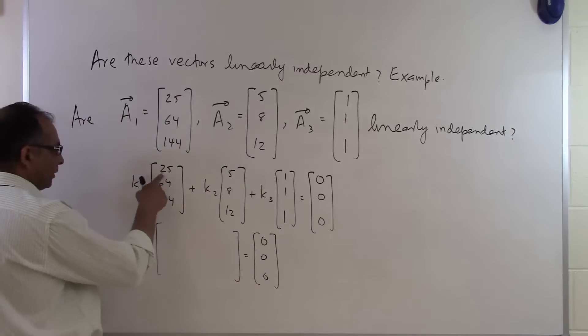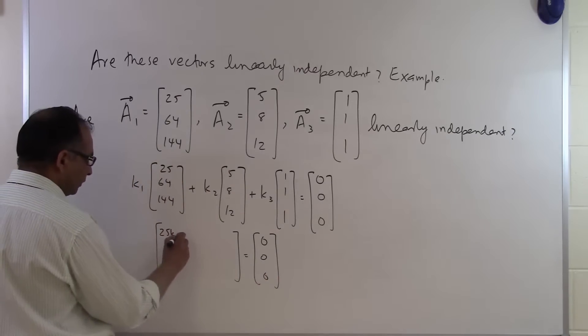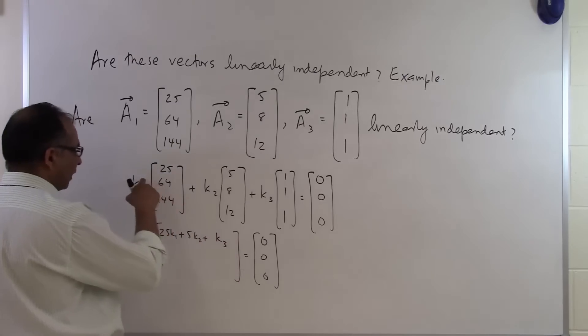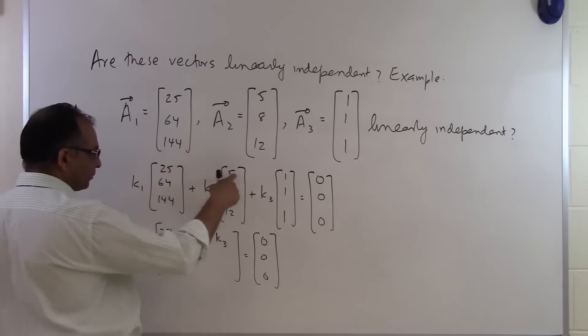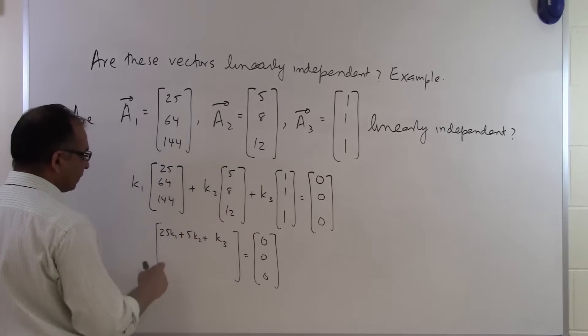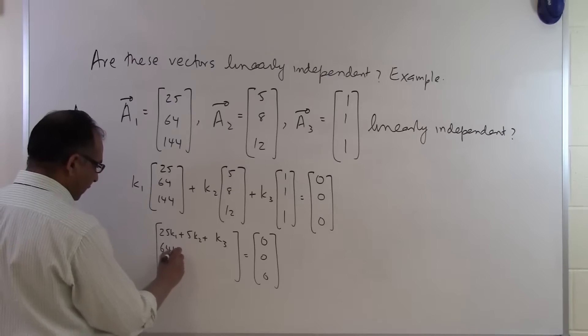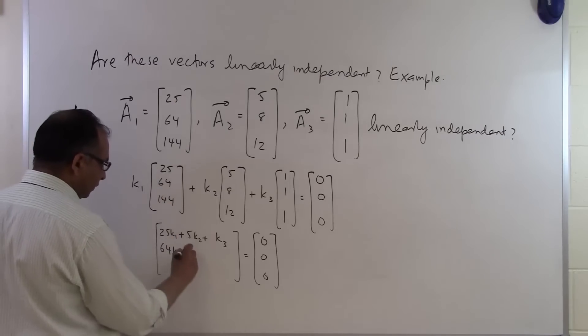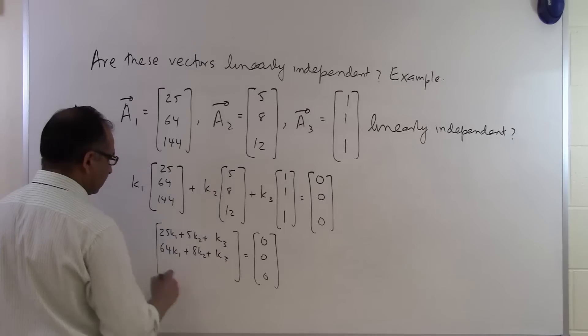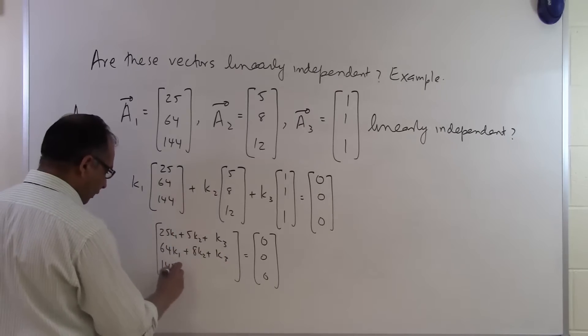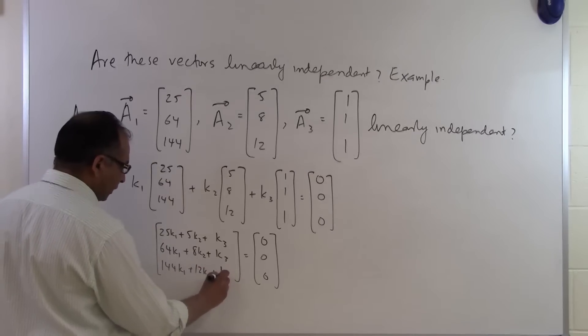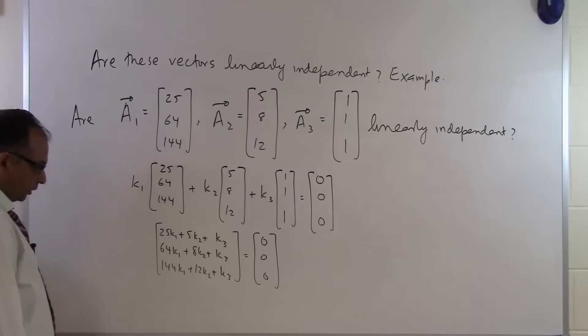This is a linear combination. So you will get 25k1 plus 5k2 plus 1k3 here because you will have 25 times k1, 5 times k2, and 1 times k3. And since we are adding them up, you will get that. From the next one you will get 64k1 plus 8k2 plus k3. And then here you are going to get 144k1 plus 12k2 plus k3 equal to 0.